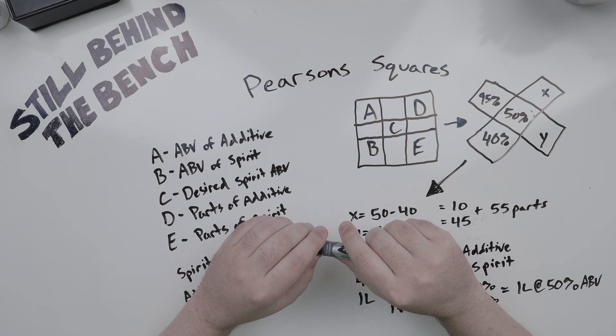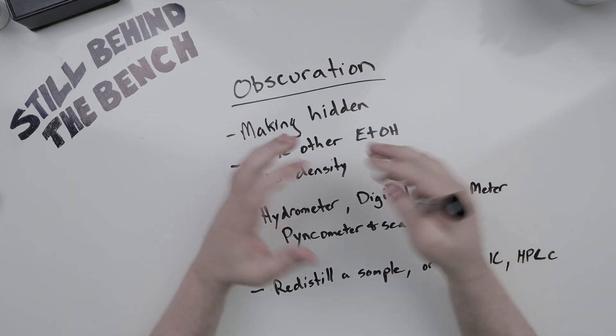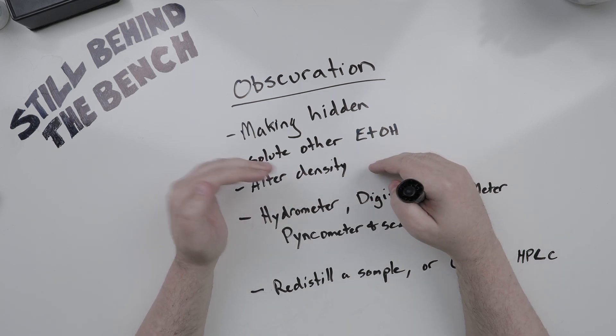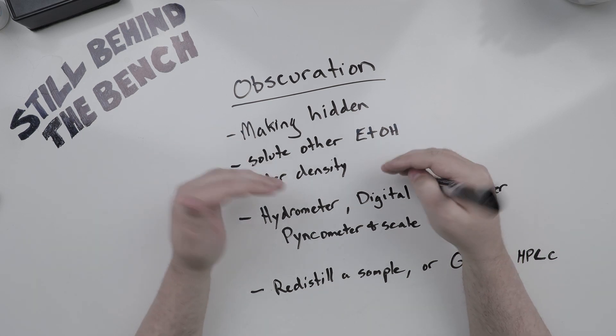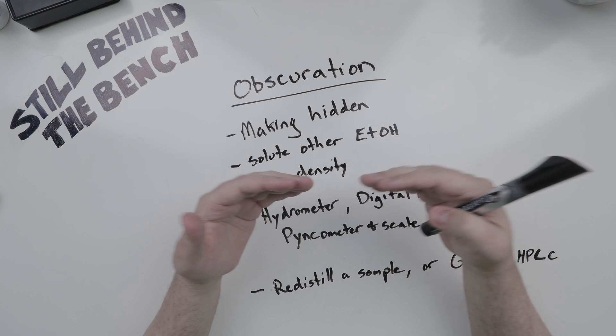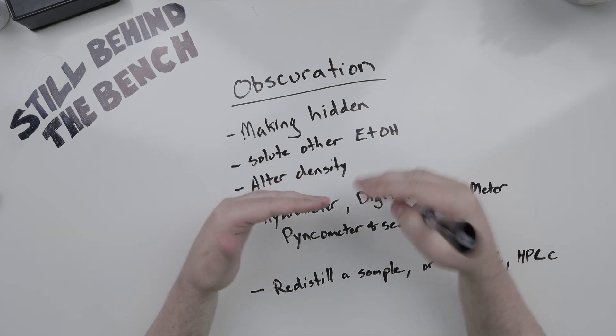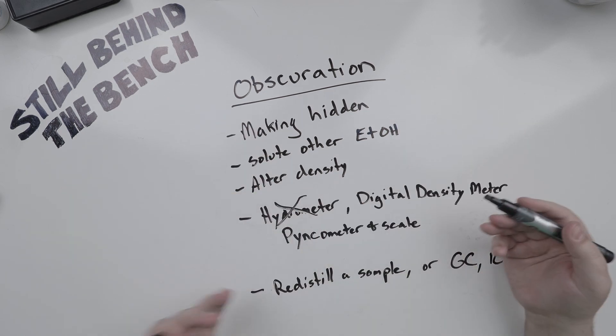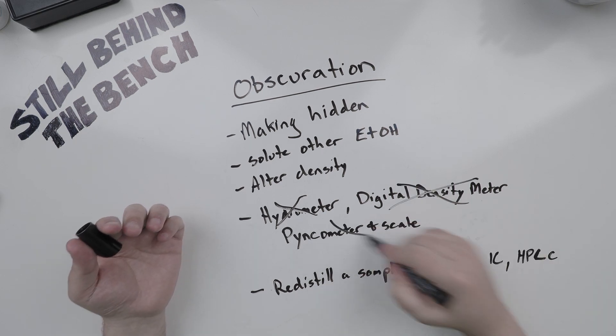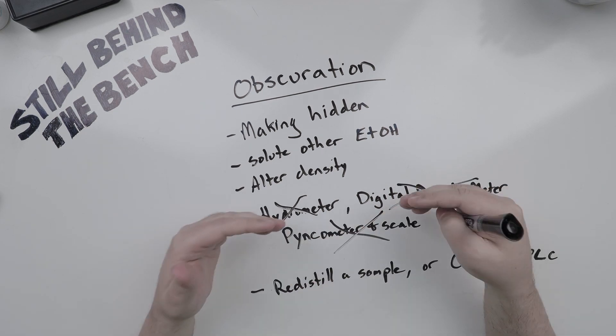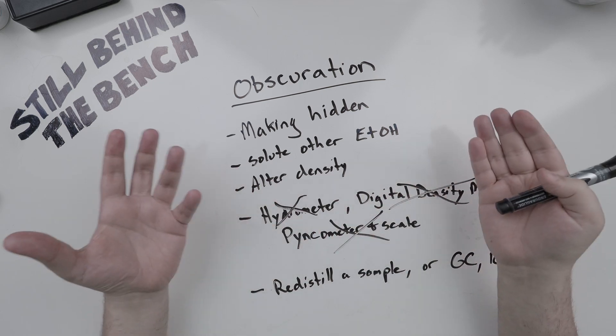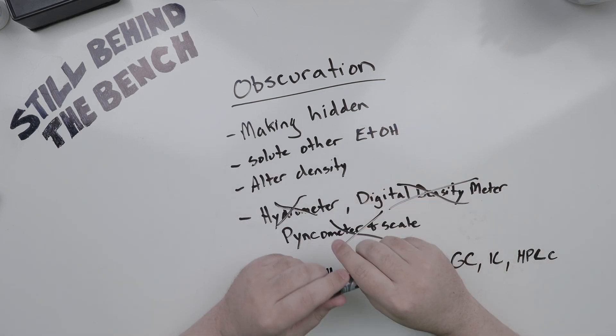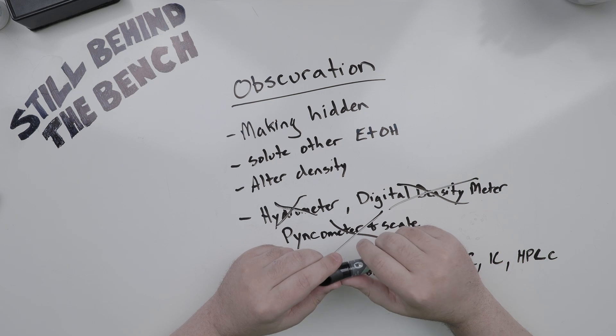The last thing I want to talk about is obscuration. This is the property whereby a solute other than ethanol is being added, altering the density and thereby obscuring or making hidden the true density of the water ethanol mixture. So you won't know the ABV or specific gravity. Your hydrometer won't work, your multi-thousand dollar digital density meter won't work, and your pycnometer and scale won't work, because they all measure density. And whatever you're adding, like sugar, is altering the density.